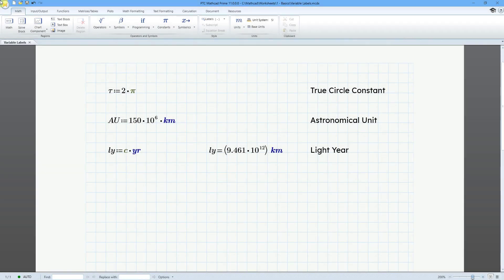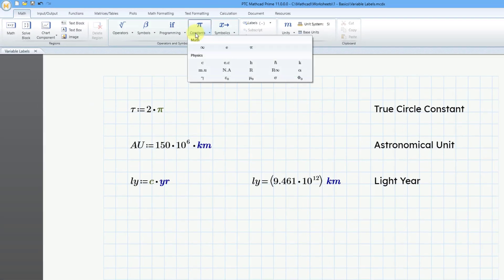In MathCAD, you can use labels to create your own constants and units. If I go to the Constants drop-down menu, here we can see the built-in constants.